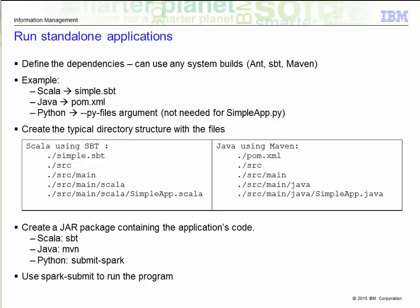You can use any tool for any of the programming languages. For Scala, the example is shown using sbt, so you would have a simple .sbt file. In Java, the example shows using maven, so you would have the pom.xml file. In Python, if you need to have dependencies that require third-party libraries, then you can use the pyfiles argument to handle that. Shown here are examples of what a typical directory structure would look like for the tool that you choose.